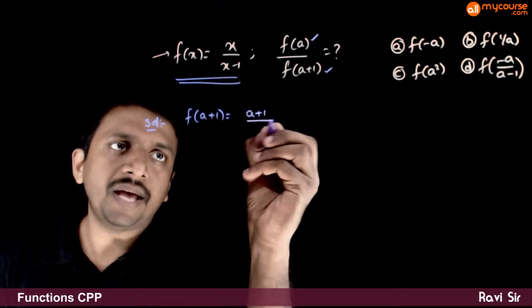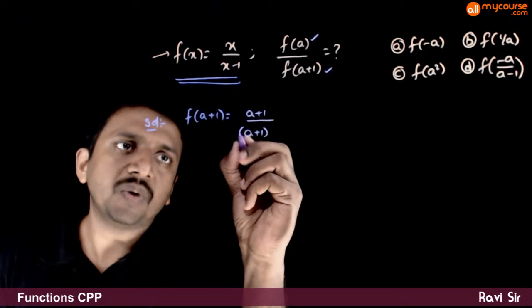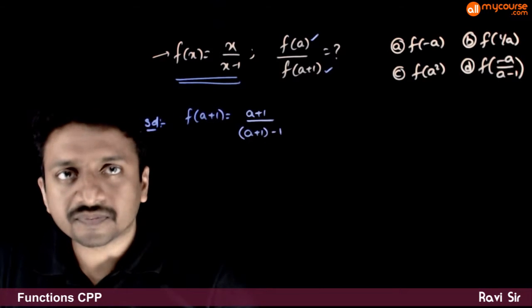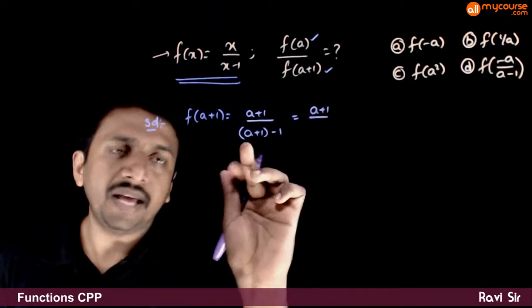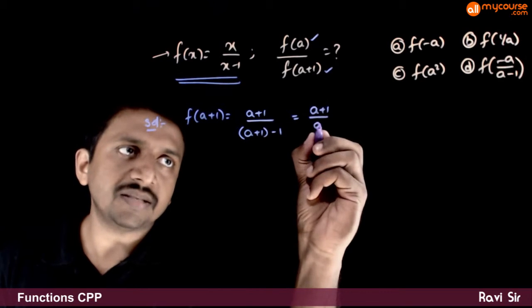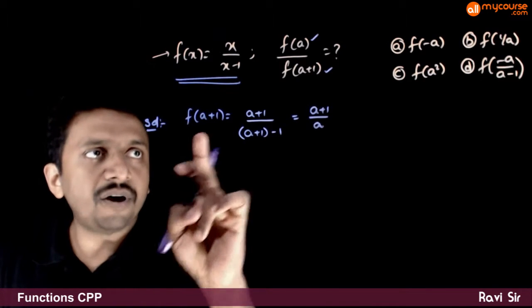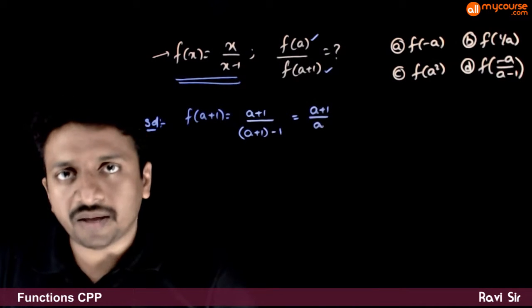a plus 1 by a plus 1 minus 1. That is nothing but a plus 1 by a plus 1 minus 1 is a. So, f of a plus 1 is a plus 1 by a.